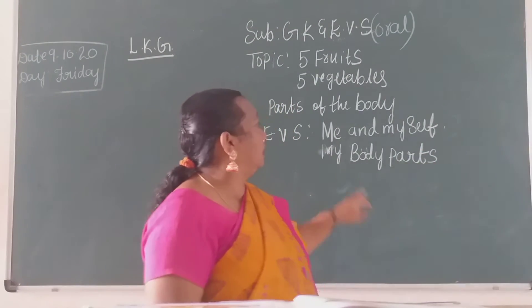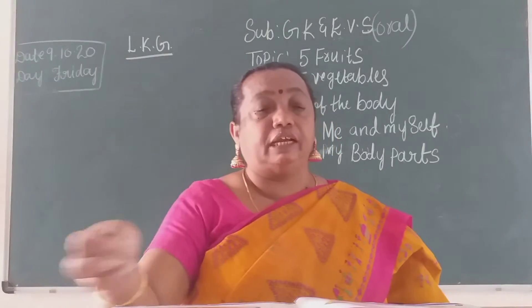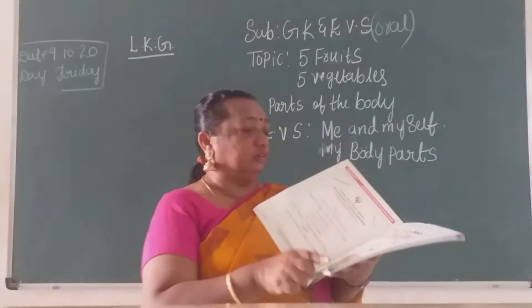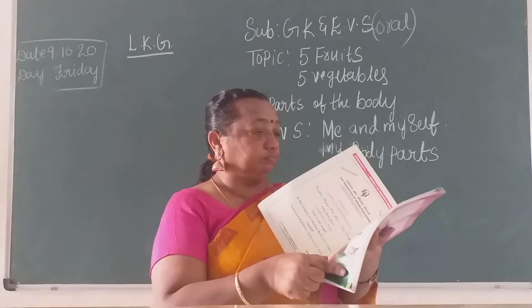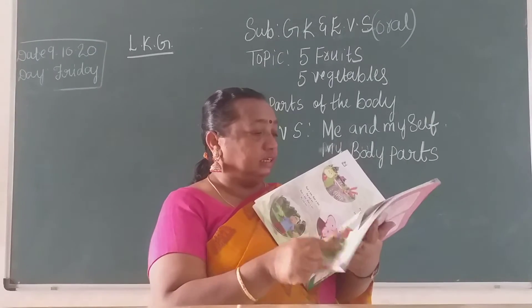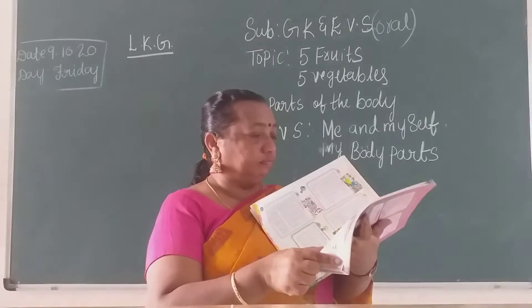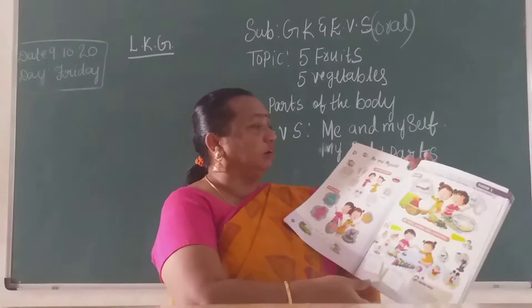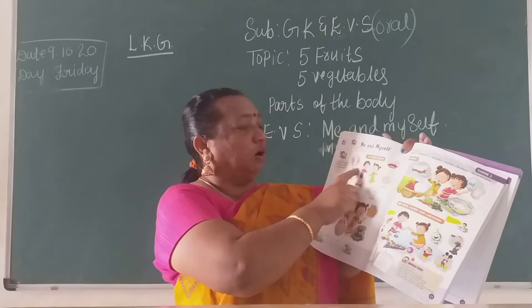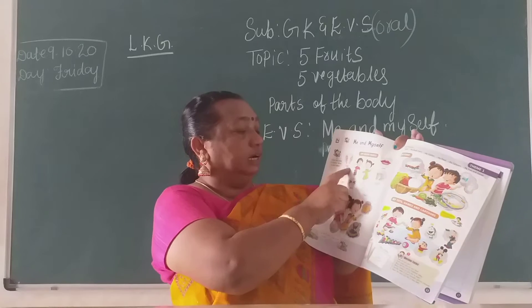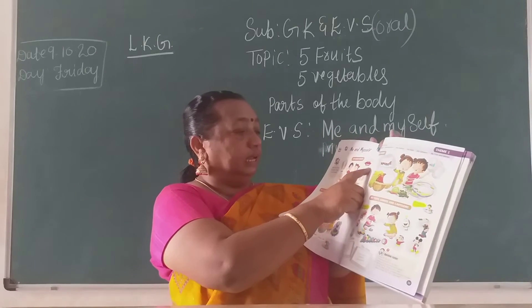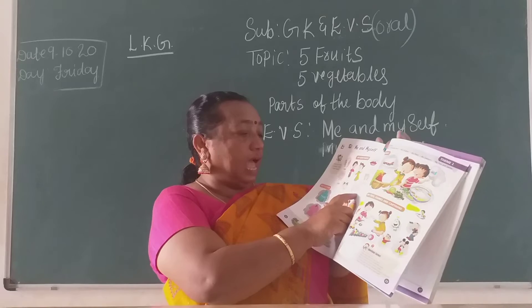Now EBS children. Me and myself. Take out your EBS book. Here, me and myself. See my body parts: ears, legs, eyes, knees, lips, hands.